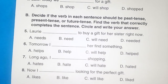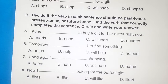Section B: Decide if the verb in each sentence should be past tense, present tense, or future tense. Write the verb that correctly completes the sentence. Question 5: Laurie needs to buy a gift for her sister right now.